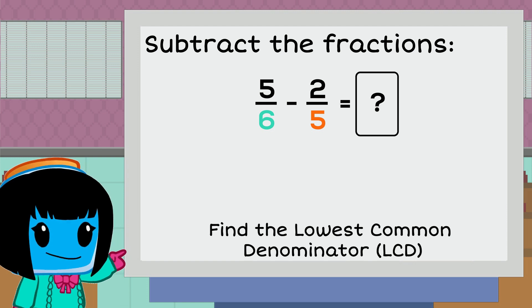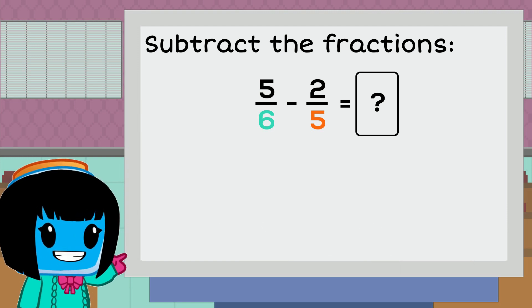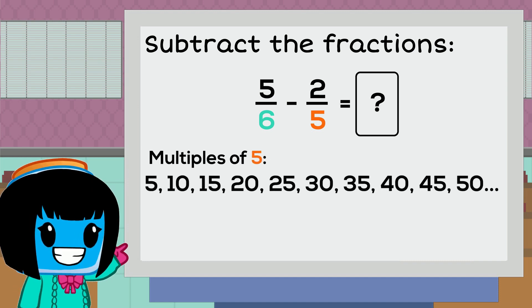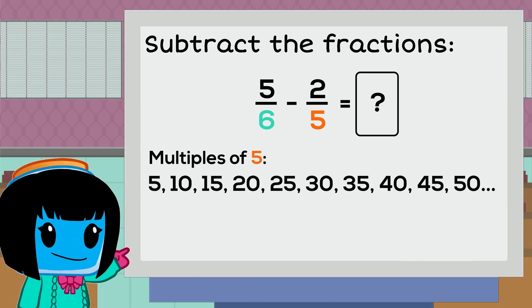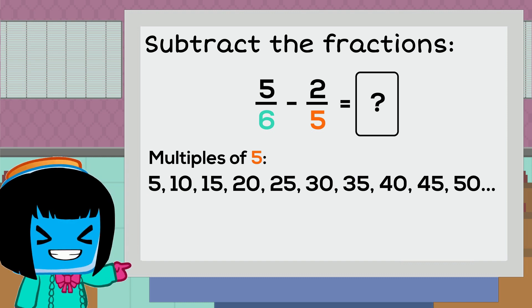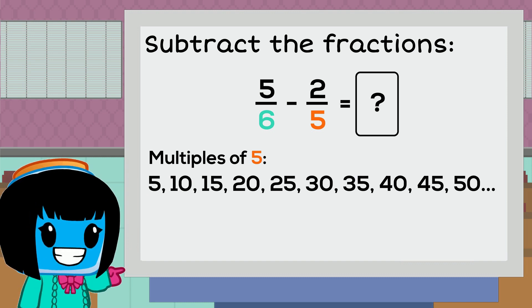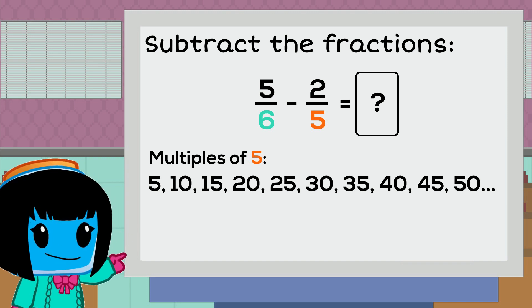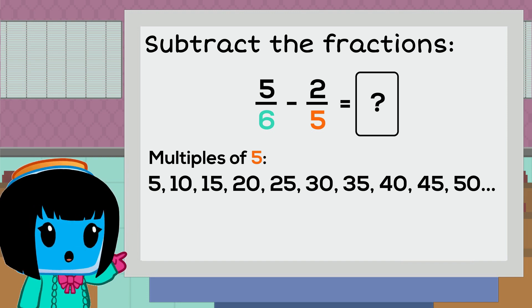Let's list the first few multiples of both 5 and 6. The first 10 multiples of 5 are 5, 10, 15, 20, 25, 30, 35, 40, 45, and 50.